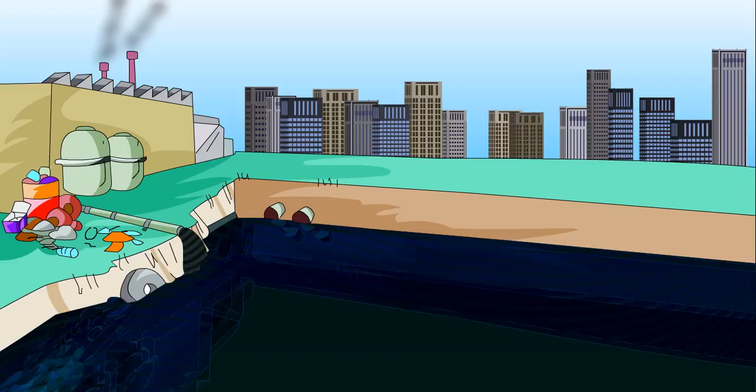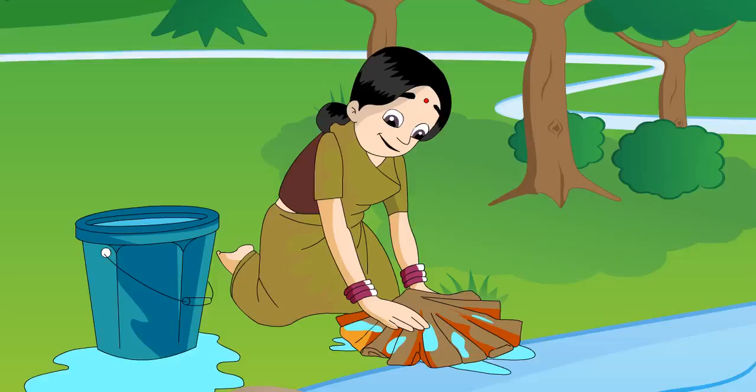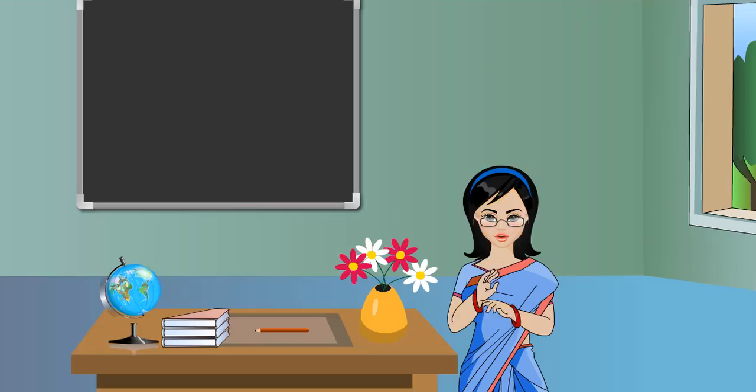Sewage from towns and waste from factories are also discharged into rivers. People wash clothes, bathe, and urinate near lakes and rivers, thus making them unclean and polluted.